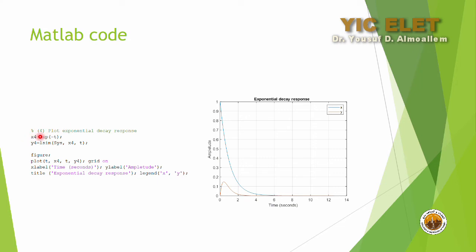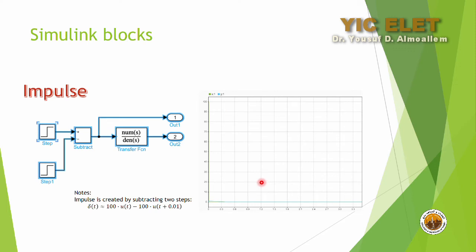For the exponential decay, first define the input, then define the output using the lsim simulation command, and plot the result. Note that the output does not reach 2 — it decays very fast and is almost zero before reaching that value. The input is an exponential decay signal. With this, we have finished the MATLAB code portion.